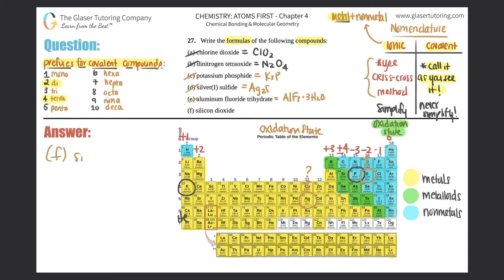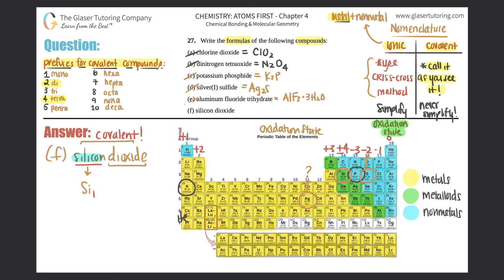F: silicon dioxide. Silicon is a metalloid, which has both metal and non-metal properties, so it's ambiguous at first. But the prefix di is a clue — prefixes are only used for covalent compounds, so this follows covalent rules. Silicon with no prefix means one silicon, and dioxide means two oxygens. The formula is SiO₂.